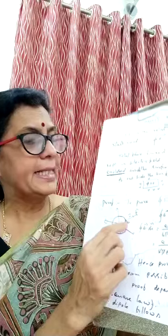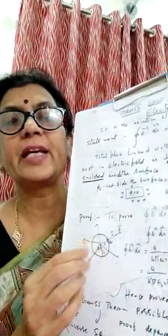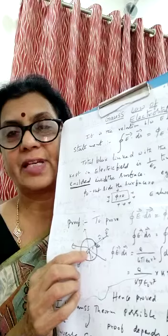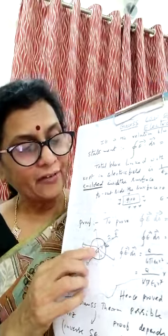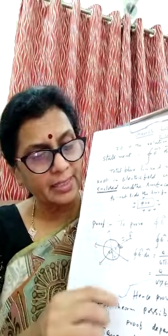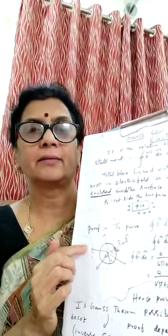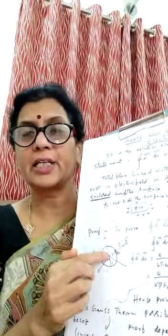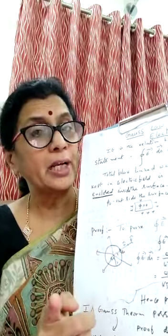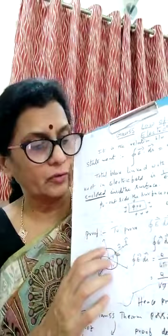To prove: consider a spherical surface with a +q charge at the center. The electric field lines due to this charge are perpendicular, outward drawn normals — this is the direction of the electric field. Because it is a positive charge, when you bring a +1 charge near it, there is a force of repulsion, so the electric field lines move outward.